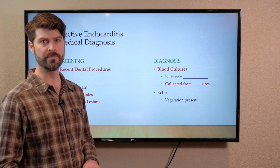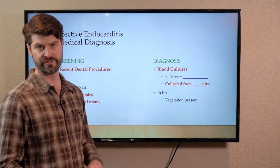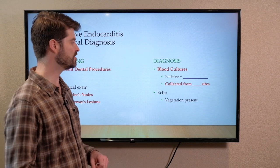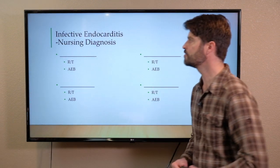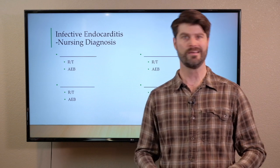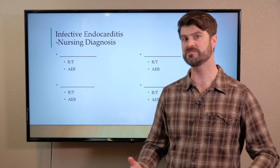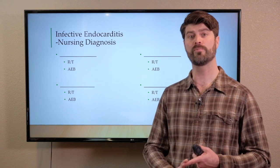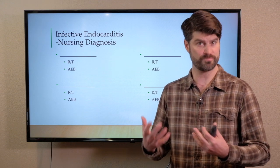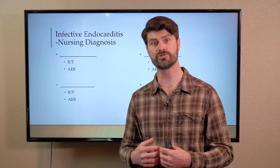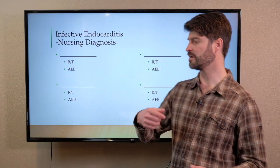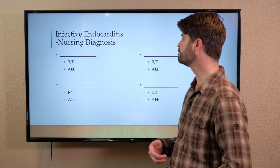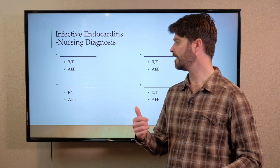An echocardiogram is also done because we want to visualize the vegetation on the valve and see the regurgitation and functional disorder caused by that bacterial vegetation. For nursing diagnoses, not a lot are going on because patients don't have severe symptoms. There can be activity intolerance from poor cardiac output resulting from almost valve prolapse type symptoms — incomplete closure of the heart valves — and altered respiratory pattern from shortness of breath.